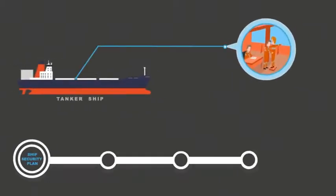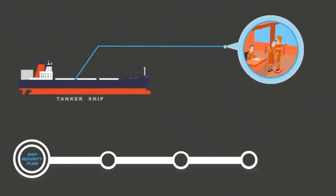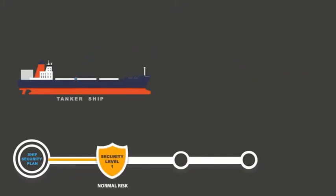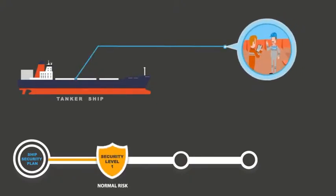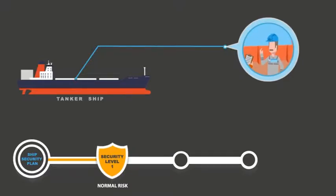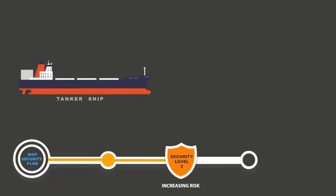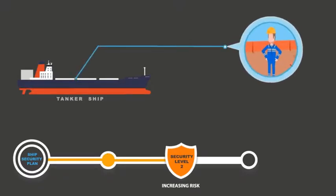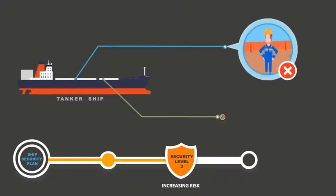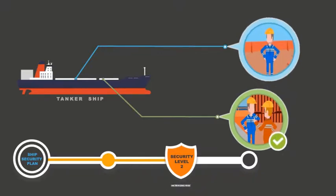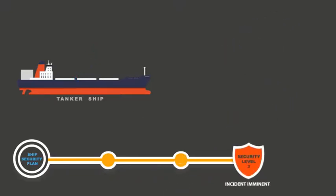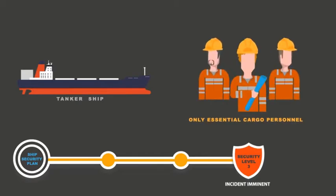With tankers, the increased security levels affect how visitors are treated on board. At security level 1, you should confirm that cargo surveyors and similar visitors have positive identification to prove who they are. At security level 2, ensure that cargo personnel are not allowed on the tank deck without an escort. At security level 3, cargo personnel should only be allowed on board if their presence is essential.